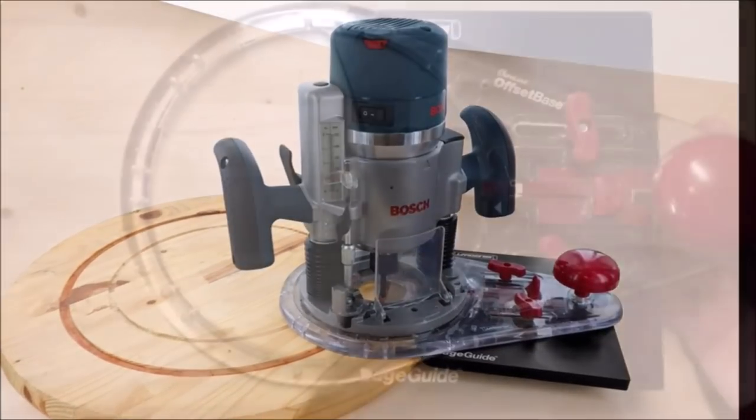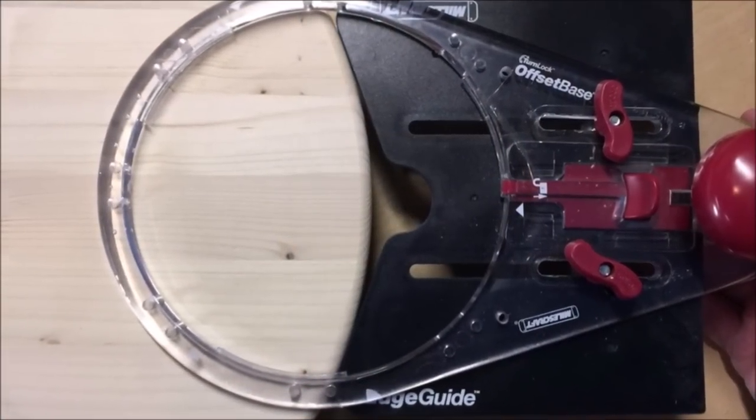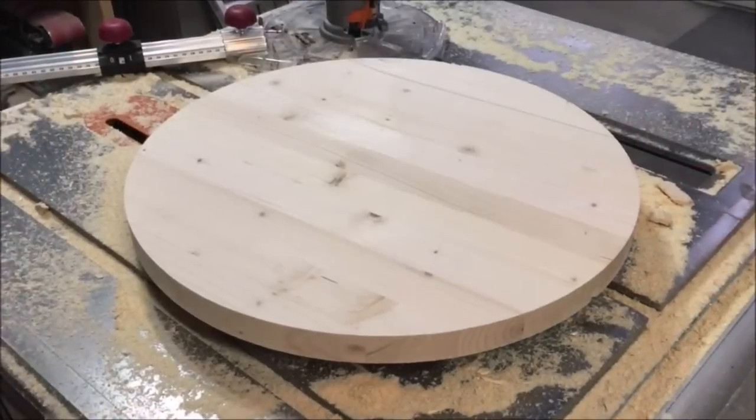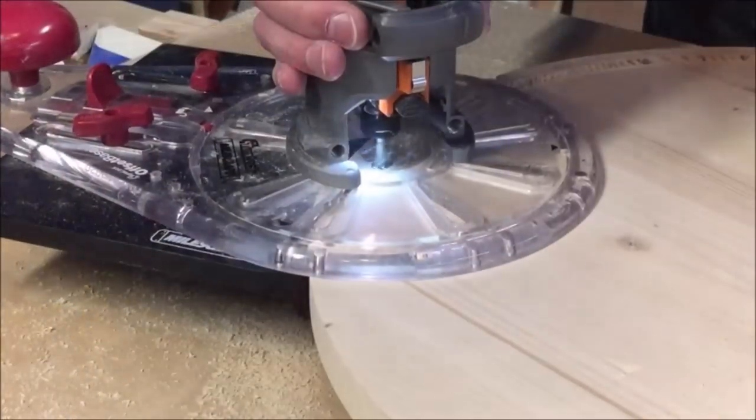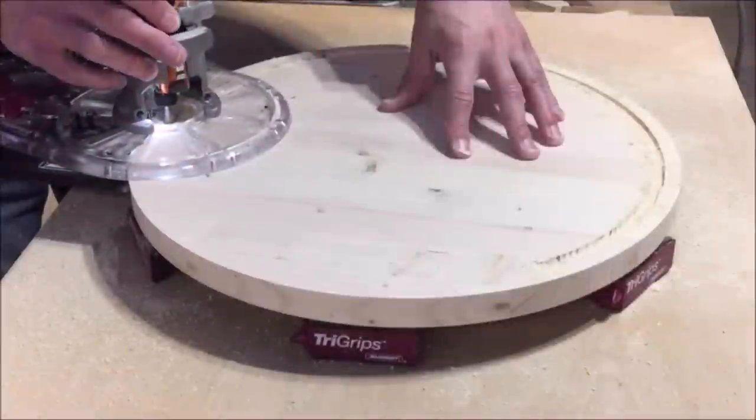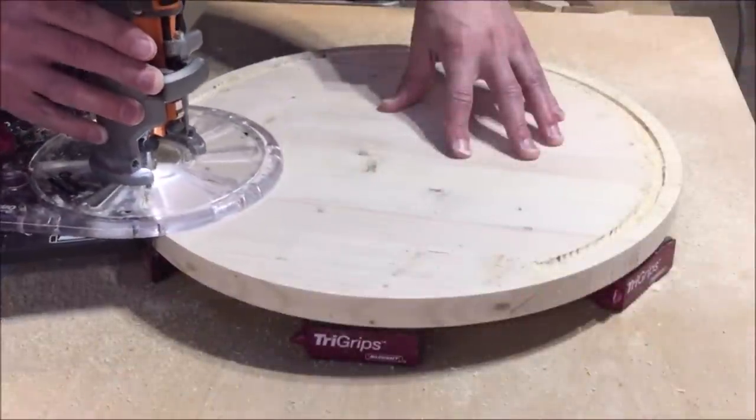By removing the edge guide and turning it around, you can cut along curved surfaces as well. The offset base can also be mounted to smaller trim style routers for smaller projects. The routing options are endless.